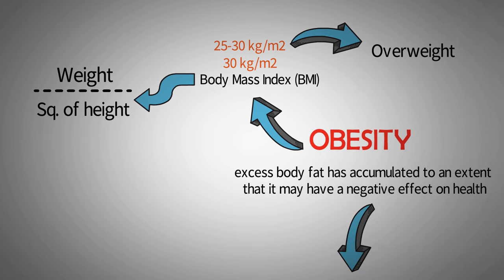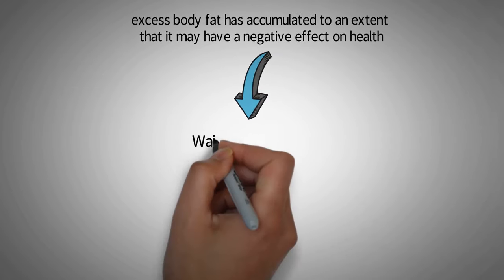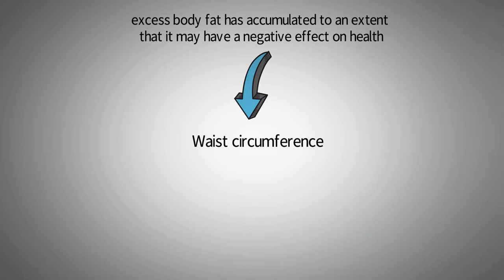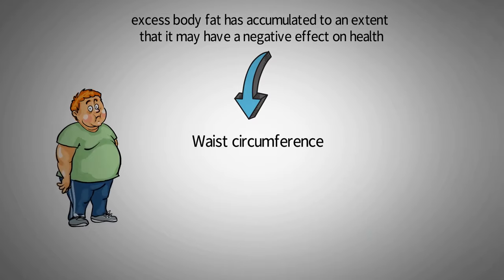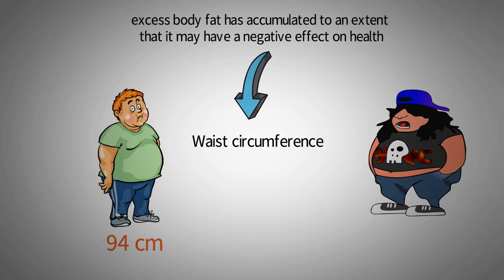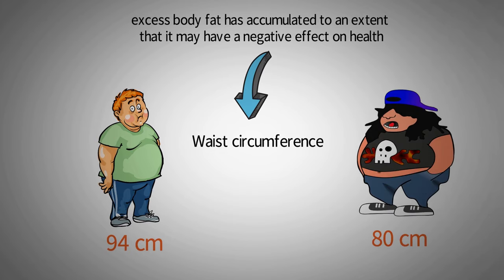Obesity is further evaluated in terms of fat distribution around the waist, or waist circumference. Men with a waist measurement of 94 centimeters or more, and women with a waist measurement of 80 centimeters or more, are more likely to develop obesity-related health problems.